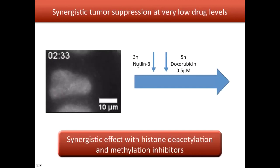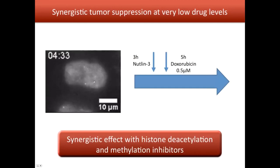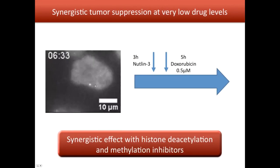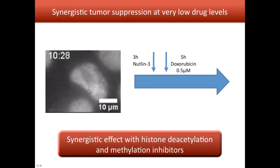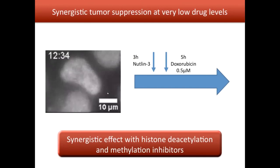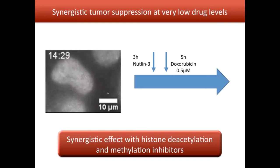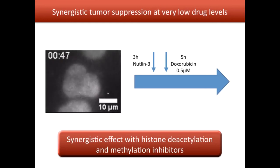We can use these tools to find synergistic effects. For example, I pre-treated cells for three hours with nutlin — which increases p53 concentration — and then induced with doxorubicin. The expectation is that with more p53 protein, we can induce more apoptosis. Although I didn't have time to fully analyze this movie, we can see from the images that the level of p21 expression is very strong compared to before, giving us a powerful tool to test synergistic effects between different drugs, concentrations, and kinetics.